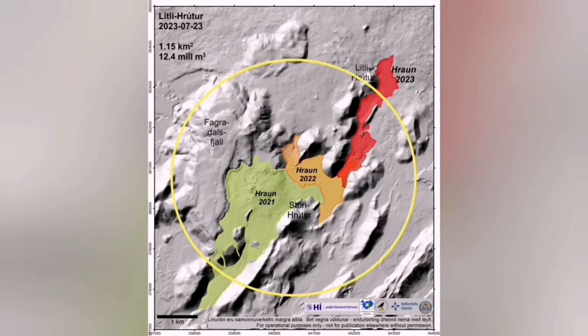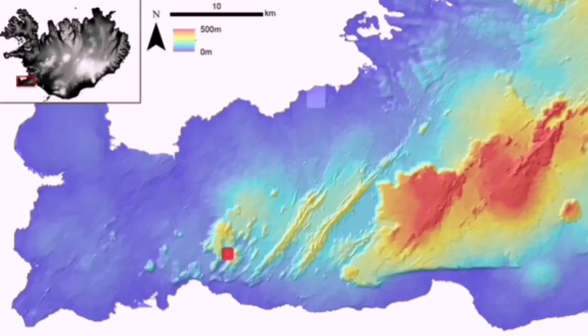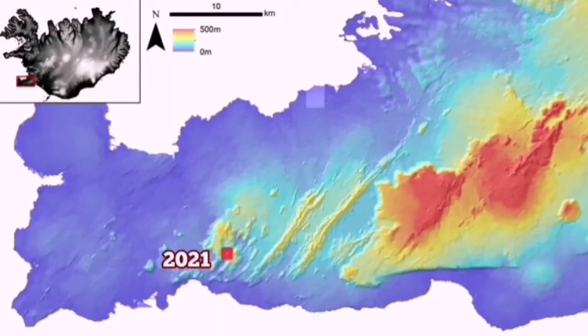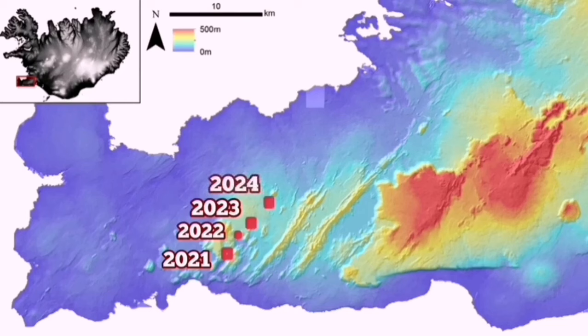The dike is fed by the mantle. As the eruption happens in this area in 2021 in Fagradalsfjall, 2022 in Meradalir and Litli-Hrútur in 2023, it may extend to the years beyond.